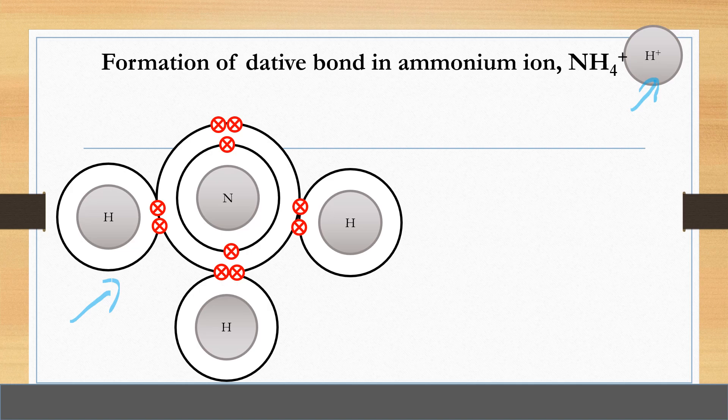So the lone pair of electrons that are not involved in covalent bond in ammonia molecule will be shared with hydrogen ion through the formation of dative bond.